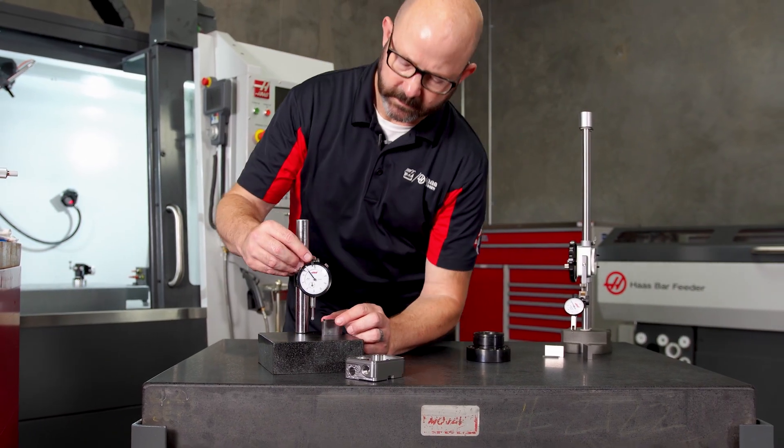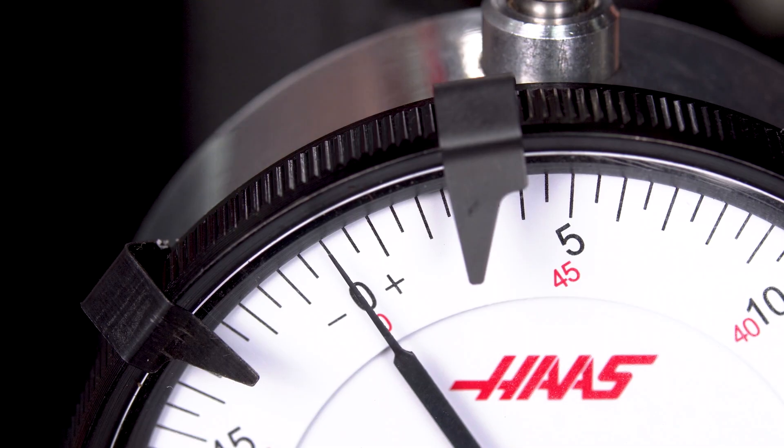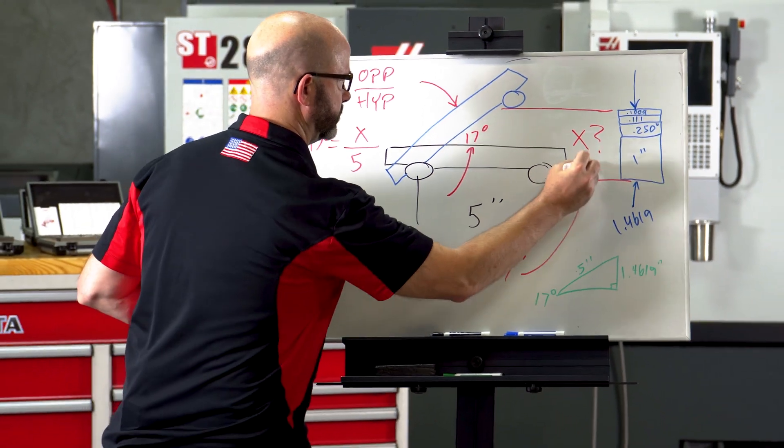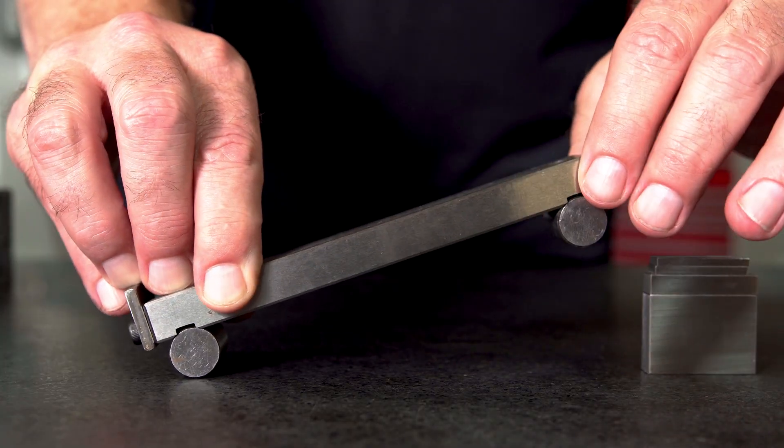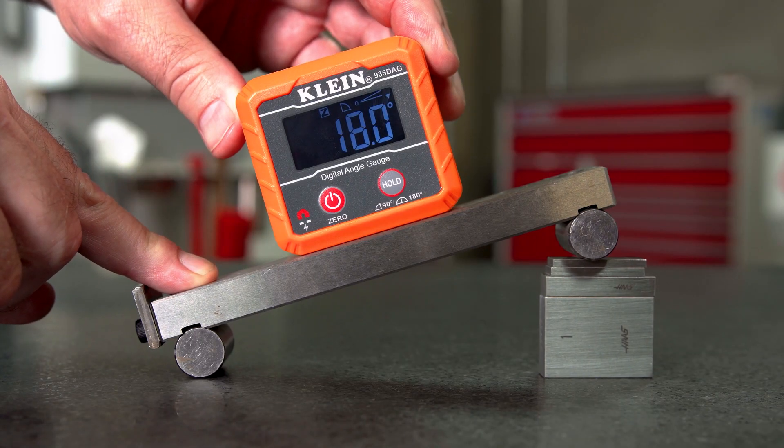Combined with a drop gauge, our gauge blocks can provide the absolute reference values that we need. Now, we will use gauge blocks along with a little trigonometry to produce perfect angles using sine bars or sine plates.